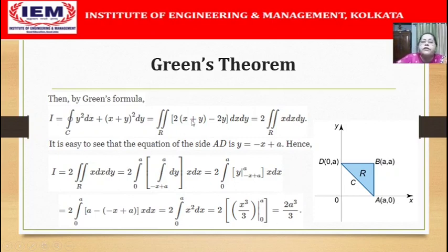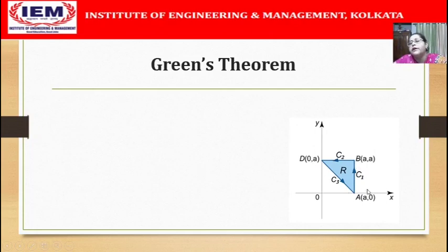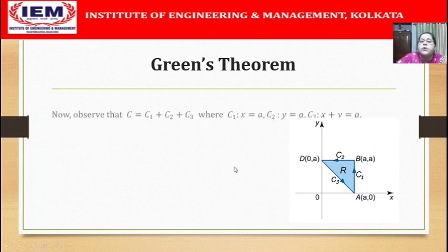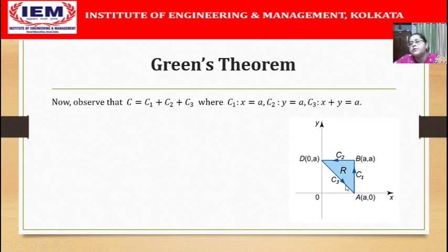In order to verify Green's theorem, we now directly evaluate the line integral. The contour C comprises three curves: C1 — the straight line from A to B (x equals a), C2 — the straight line from B to D (y equals a), and C3 — the straight line from D to A (x plus y equals a). So the line integral equals the sum of three line integrals along C1, C2, and C3.